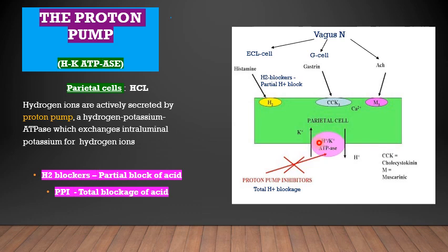To stop hydrochloric acid using medications, we have H2 receptor antagonists — histamine receptor blockers — such as ranitidine and cimetidine, which block these receptors. However, this does not block acid 100%. In the case of proton pump inhibitors, it blocks the pump, thereby blocking the final pathway in the production of acid, resulting in a total blockage of acid secretion.